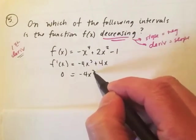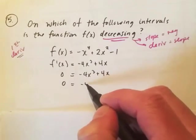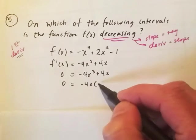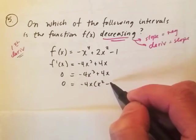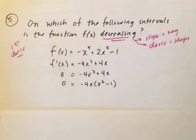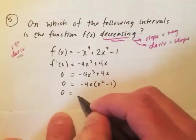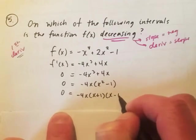So we set this equal to zero, and we can actually factor a GCF here of negative 4x. That's going to give us an x squared. And if I factor out a negative 4x here, remember that a negative times a negative will give us that positive there.